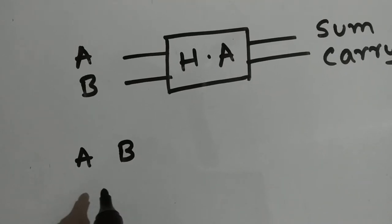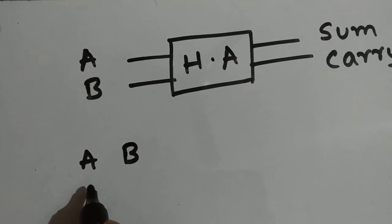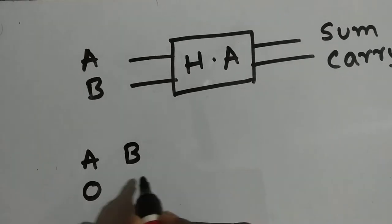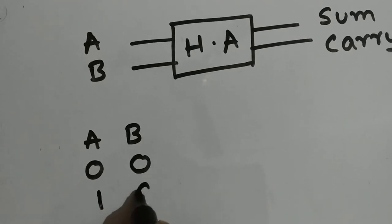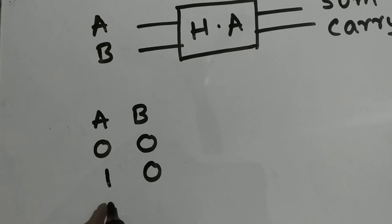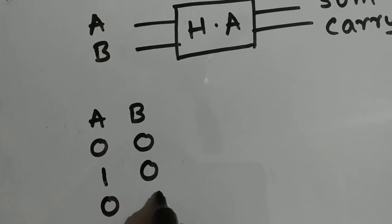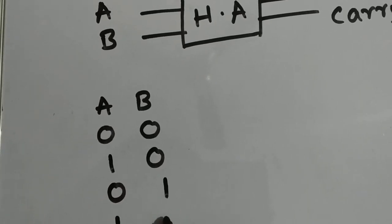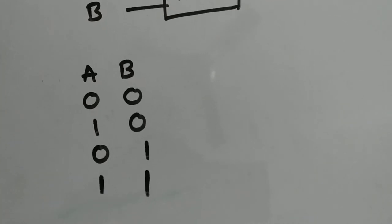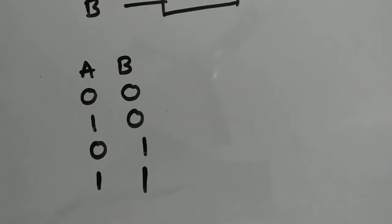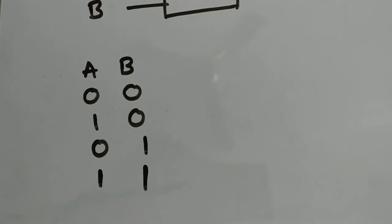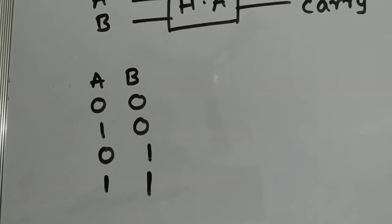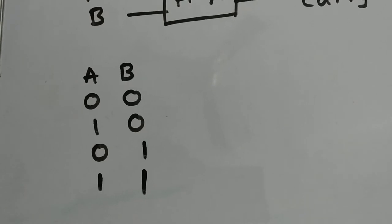What are the possible values of A and B? What are the combinations? A can be 0 and B can be 0; A can be 1 and B can be 0; A can be 0 and B can be 1; and A can be 1 and B can be 1. These are the possible combinations from two single bits.